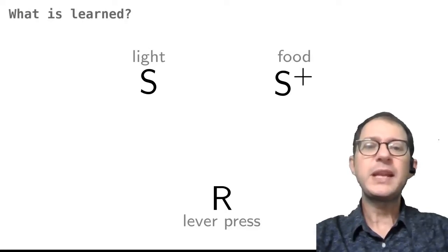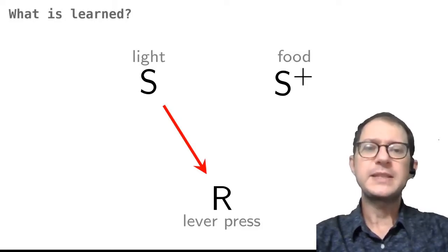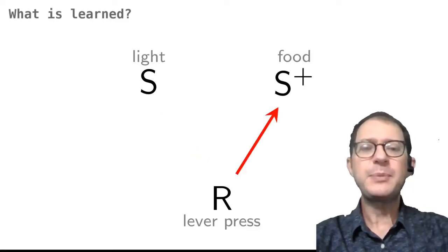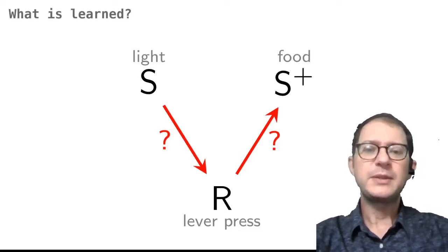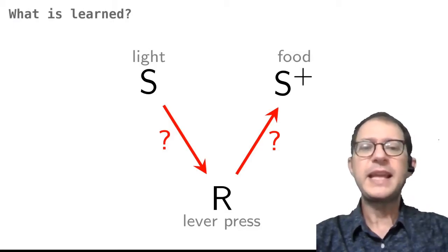It could mean that the animal connects in its mind the light and the lever press, so that it will press whenever it sees the light, or it could connect the lever press with the food, so that it would think about pressing whenever it wants the food. I also noted that both connections could be formed at the same time, and that what exactly happens is still a matter of discussion among scientists.